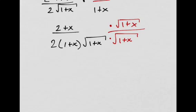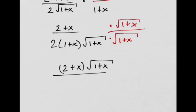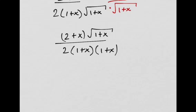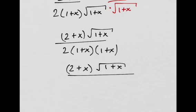So, in the top, I have 2 plus X times the square root of 1 plus X. All over 2 times 1 plus X. That makes the square root go away. So, I just have 1 plus X. And, yeah, 2 plus X times the square root of 1 plus X all over 2 times 1 plus X squared.